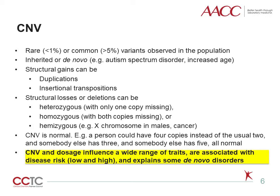CNV structural gains can be the result of duplications or insertional transpositions. CNV structural losses or deletions can be heterozygous, meaning only one copy is missing; homozygous, meaning both copies are missing; or hemizygous, meaning one copy is present. Interestingly, CNV variation can also be observed in individuals with a normal phenotype. In essence, CNV is the cause and gene dosage is the effect.